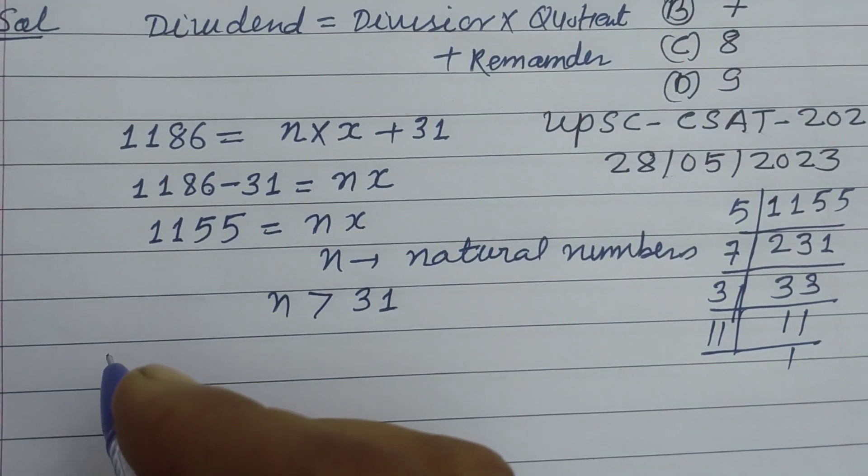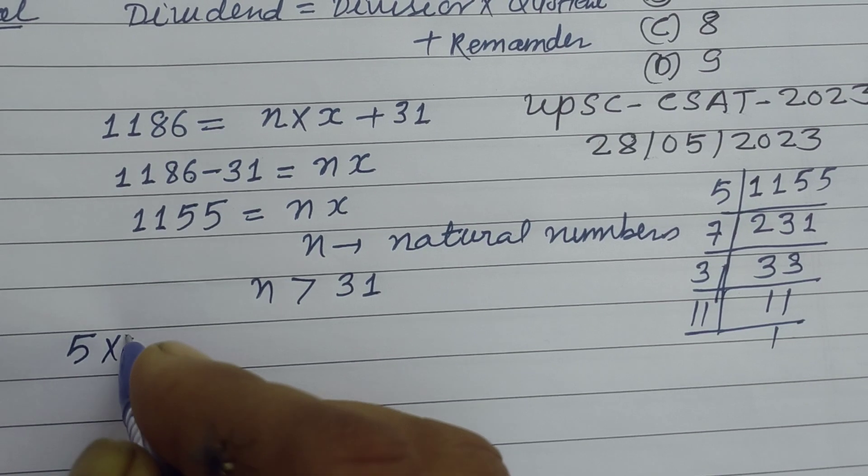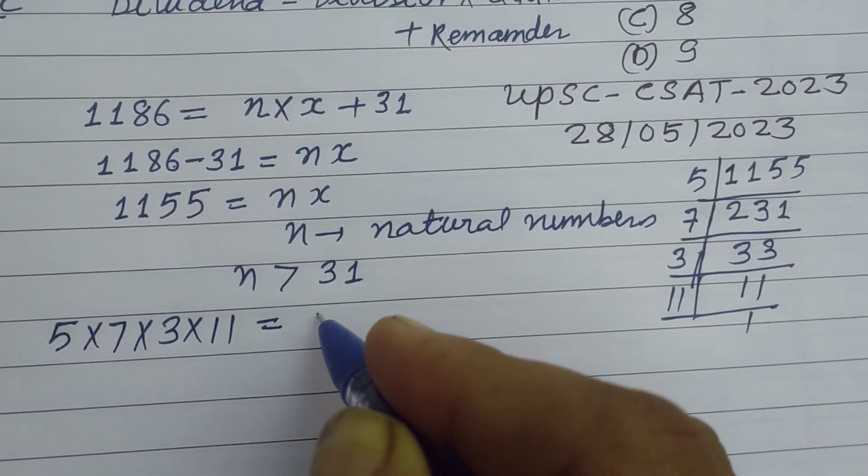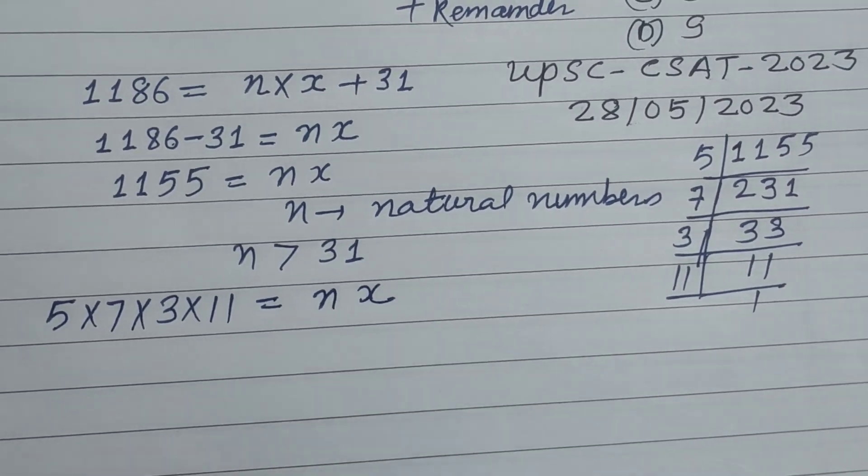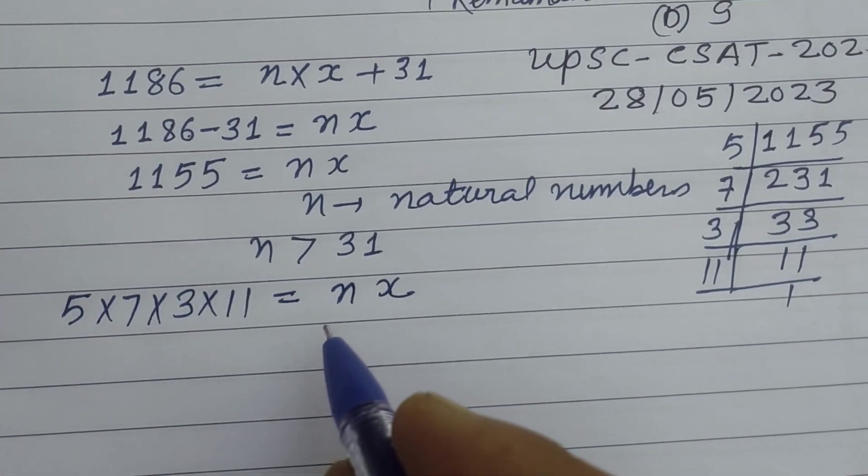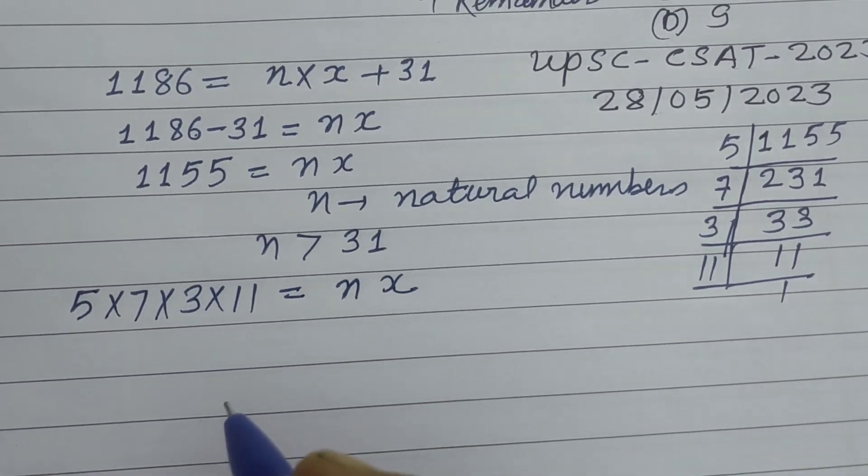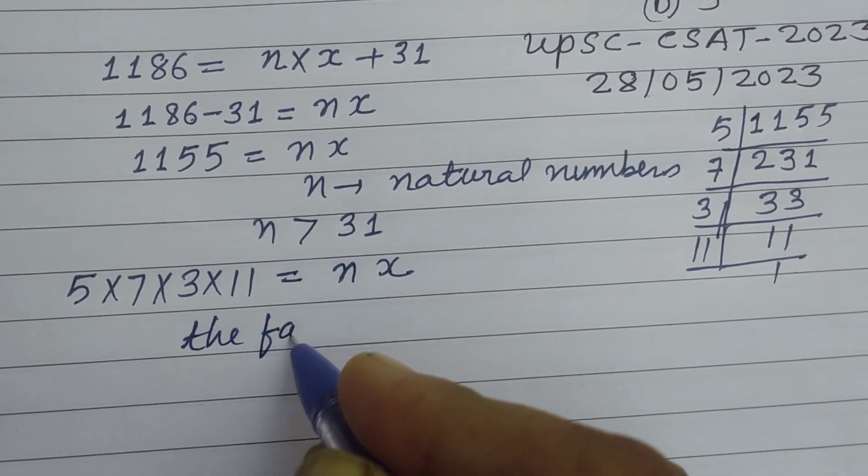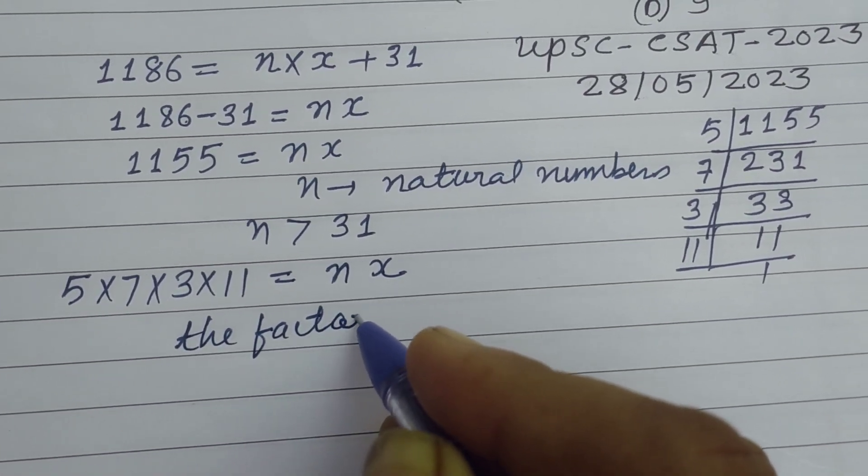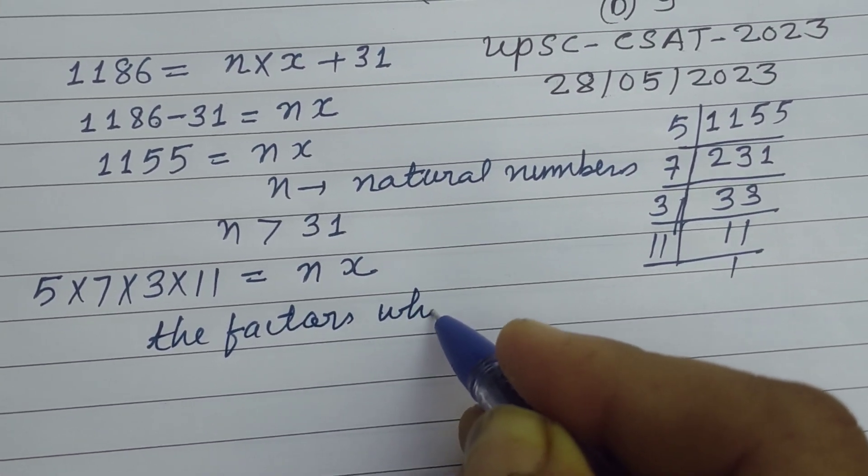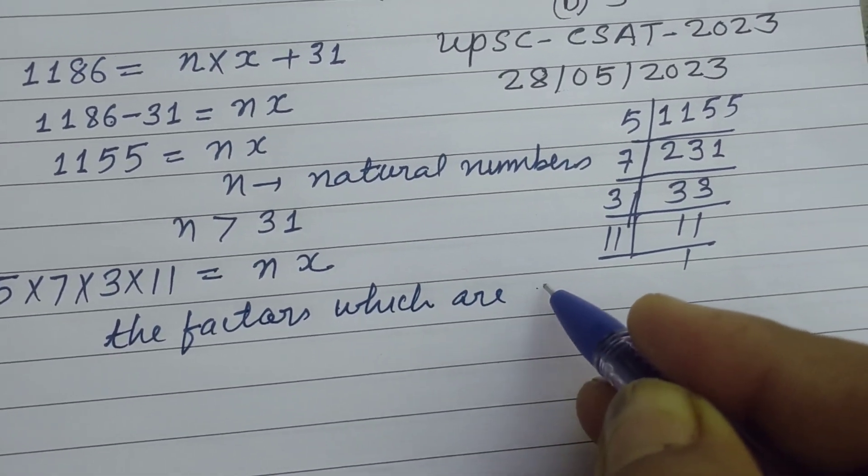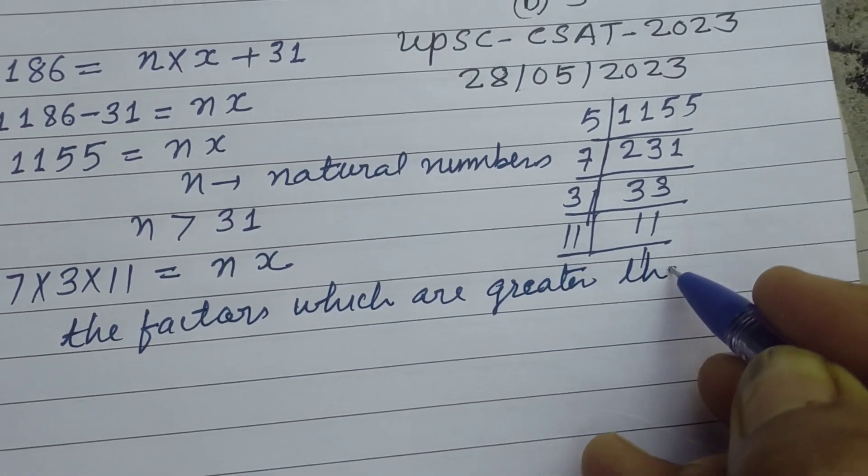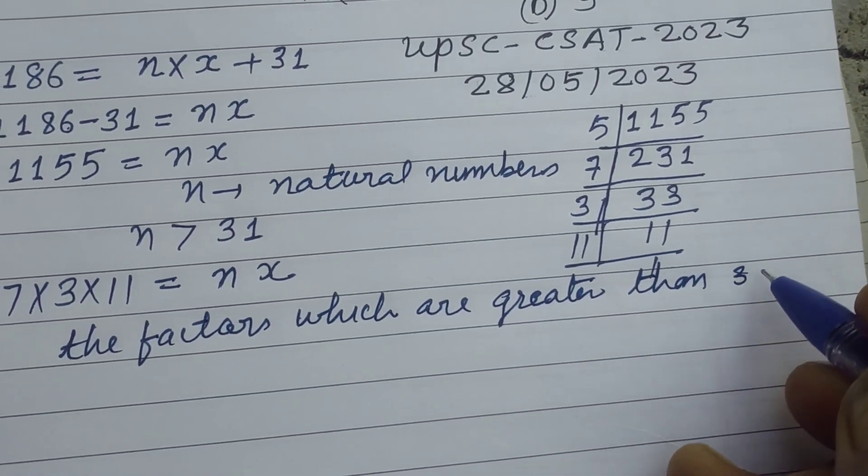Therefore the factors are 5 × 7 × 3 × 11 = N × X. We take the factors which are greater than 31.